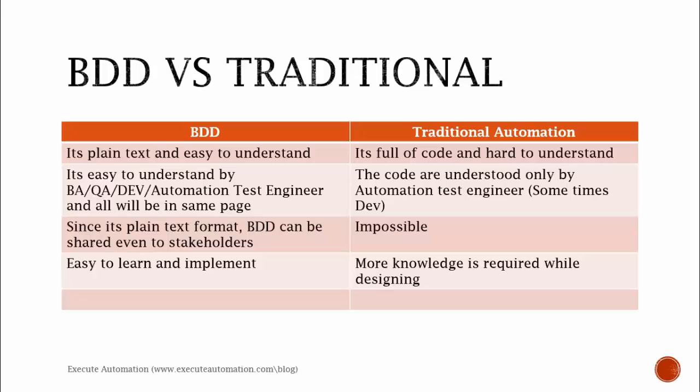Since BDD is in plain text format, it can be shared even with stakeholders. In traditional automation, we cannot share the automation script because even if we do, they will hardly understand what's been written. BDD is easy to learn and implement, but in traditional automation, as your script grows larger it becomes much harder to understand and requires a lot of knowledge. This is the end of part one — the next session will discuss Gherkin in more detail. Thank you so much for listening.